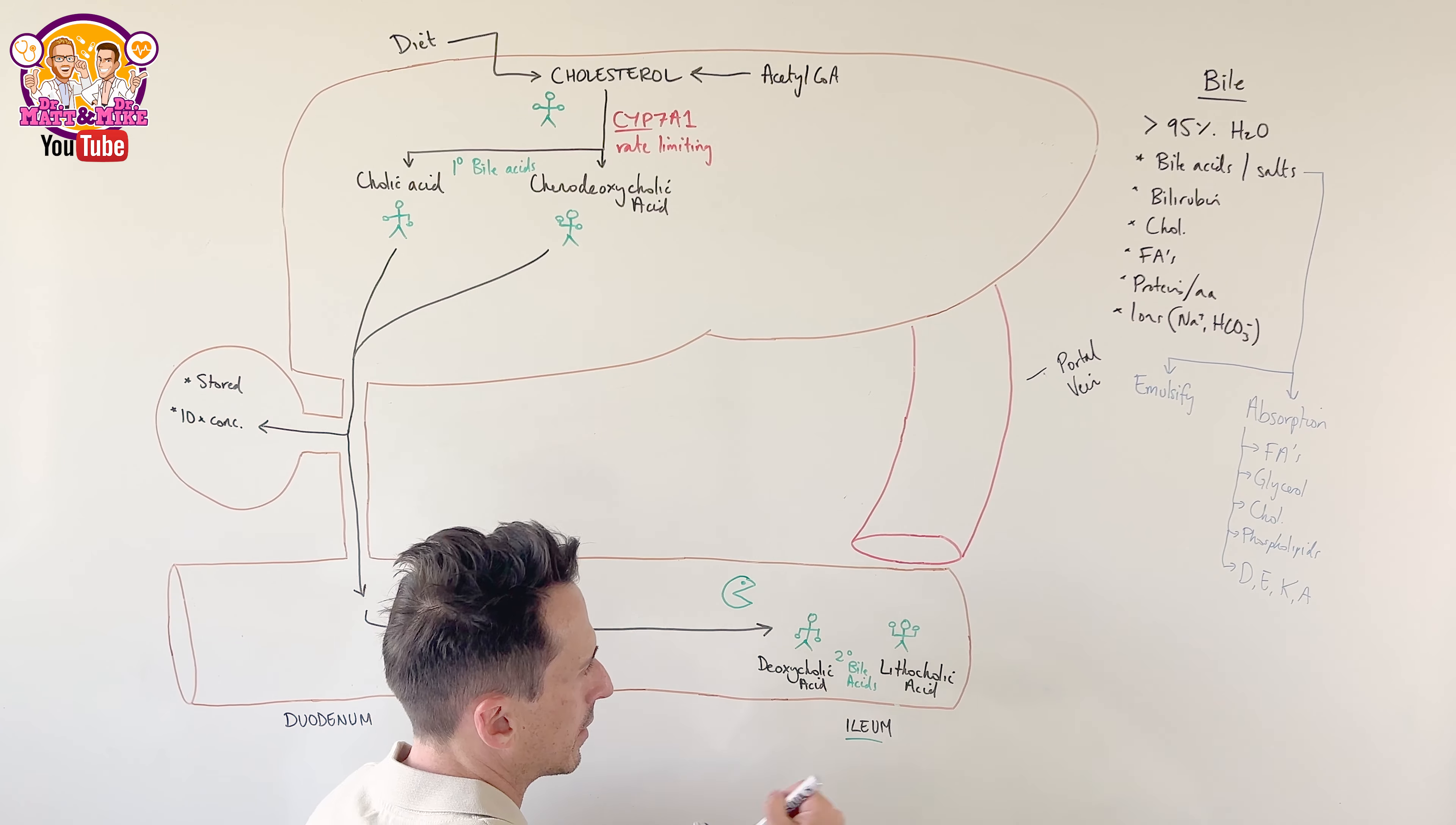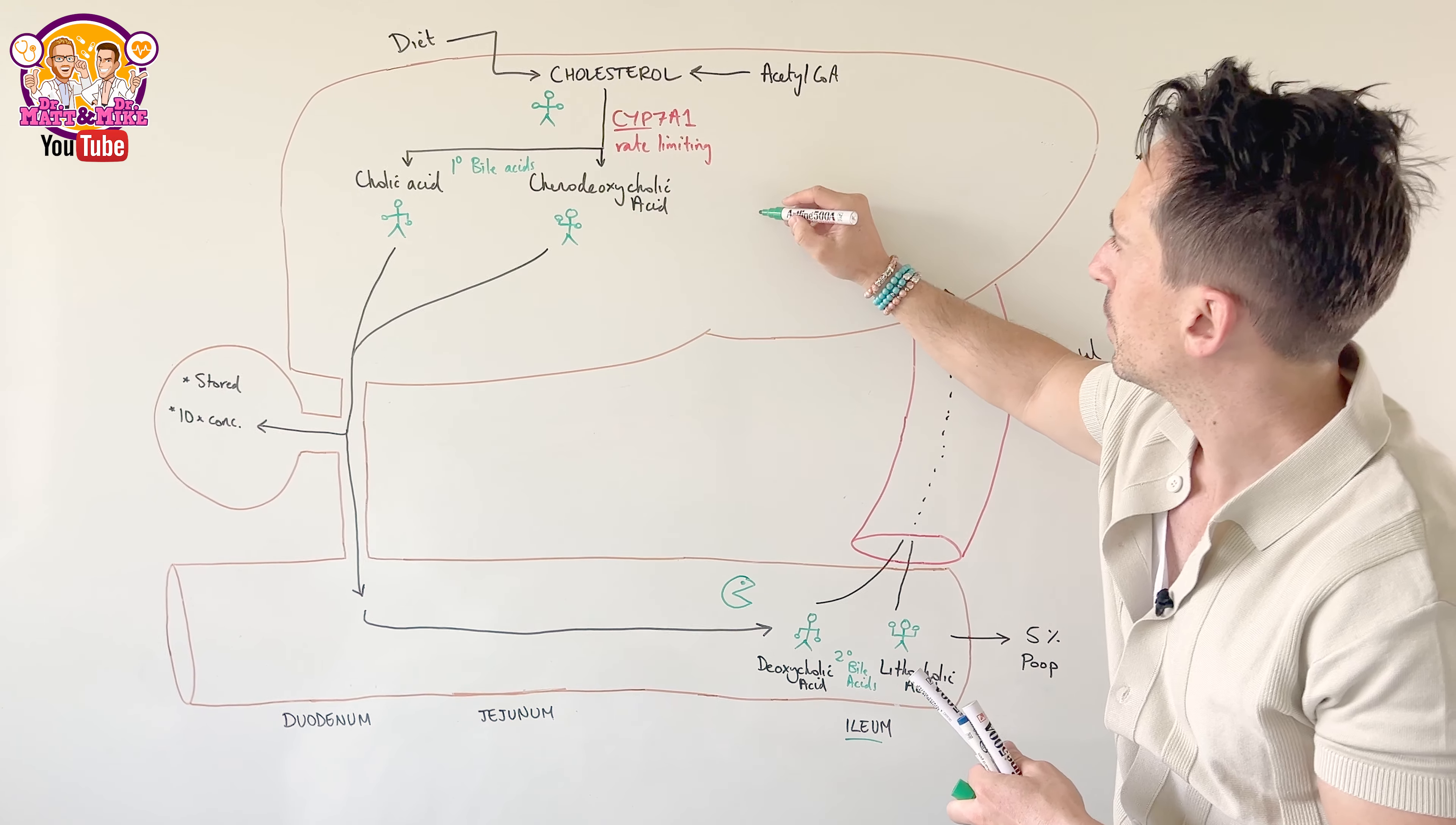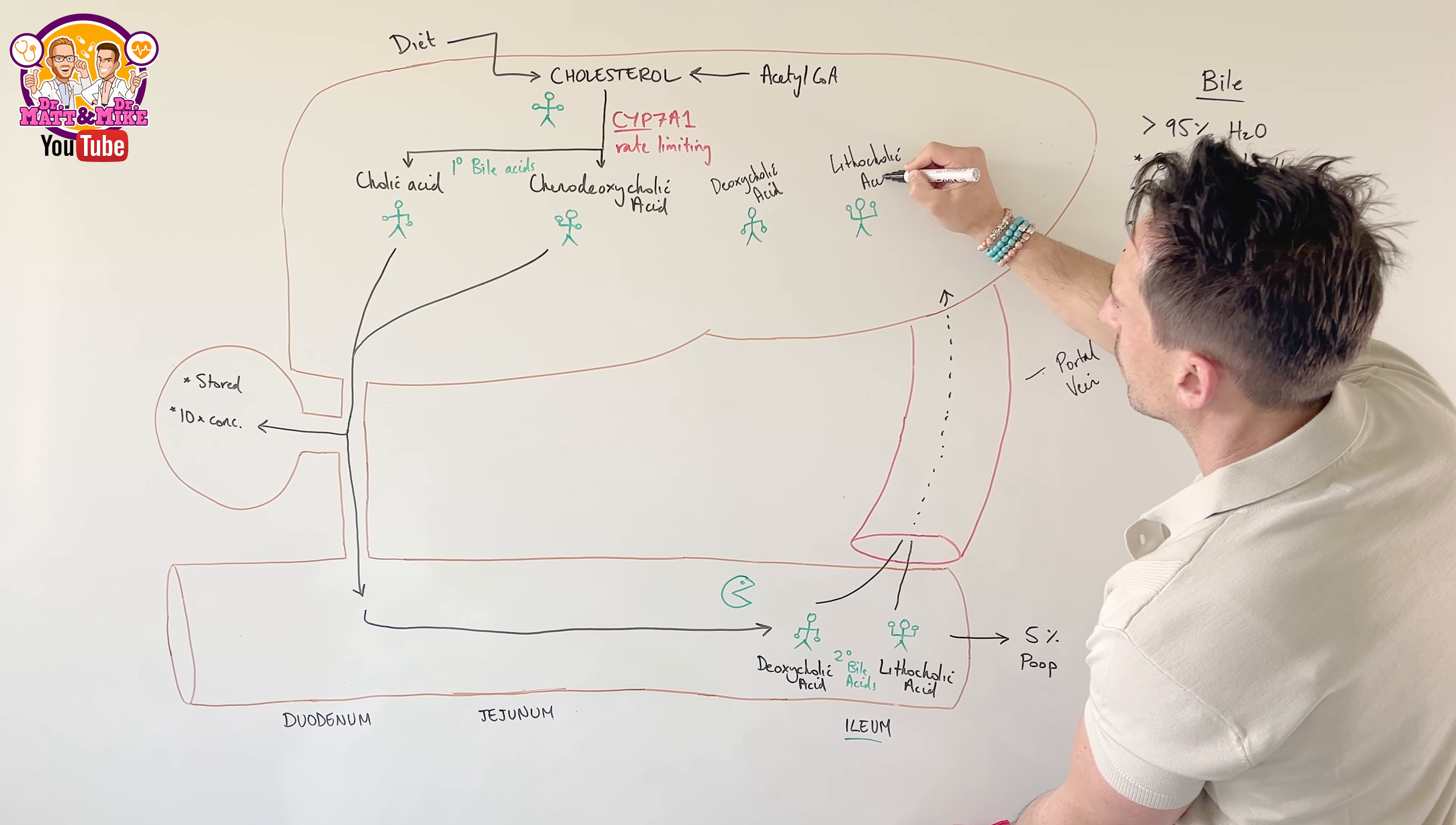Now, these secondary bile acids, about 5% of them can be pooped out, thrown out throughout feces. But 95% of them will go back into our portal vein and head back towards the liver. It'll be thrown back into the liver.